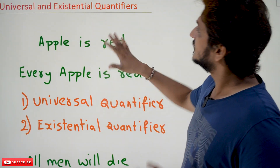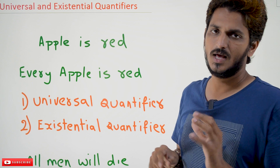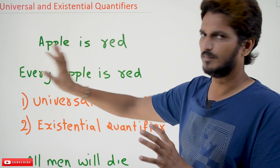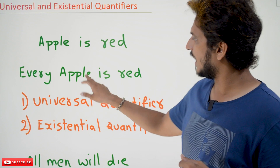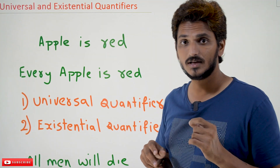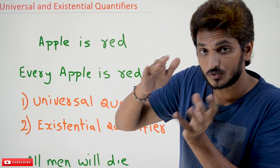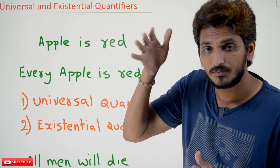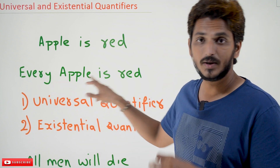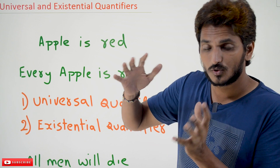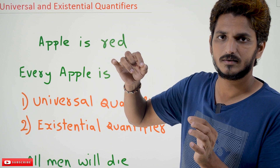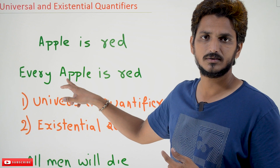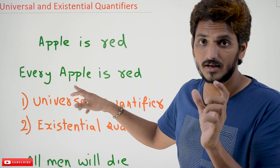Coming to today's class, first we need to understand what quantifier means. Let's take these two statements: 'apple is red' and 'every apple is red.' The second statement gives you some quantification — it tells you to what extent this statement is going to be true. 'Every apple is red' is giving some limit, it is quantifying it. You take any apple, it is in red color — that is what this statement says.